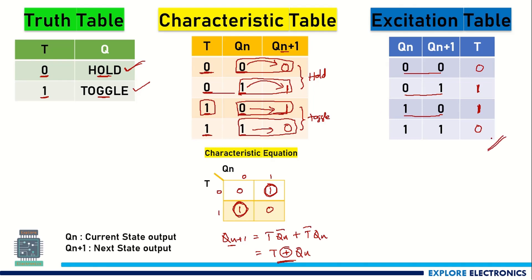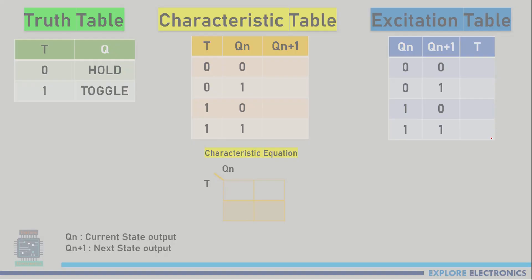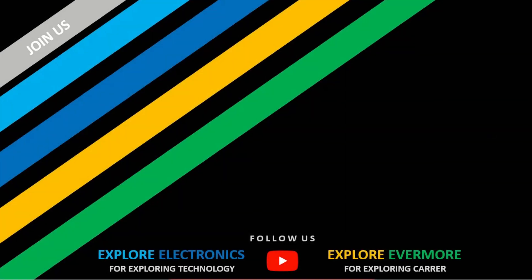Now we have seen all the excitation tables of D flip-flop and T flip-flop. In other videos I have explained JK as well as SR flip-flop. By using these excitation tables and characteristic tables, we can convert from one flip-flop to another. Let us look into the conversions in the next video. Thank you.